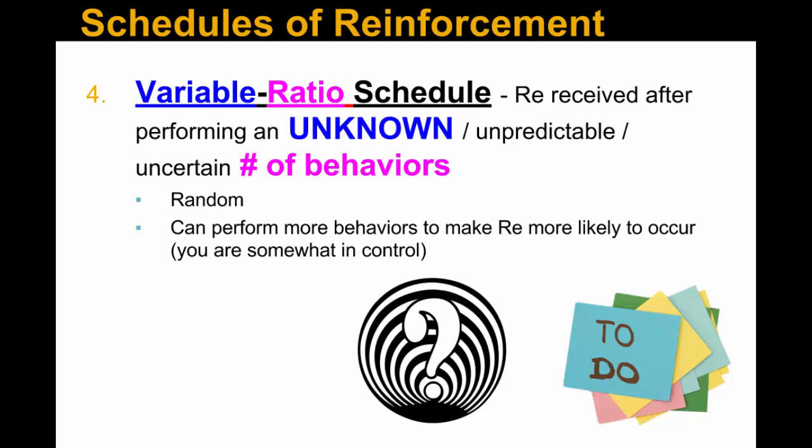Another example of variable ratio: when I was in high school training to break a school record, I couldn't predict which race I'd actually break it in. I don't know how many races I have to run before I break that record — that's a variable ratio. It's a ratio because I actually have to do something — I have to run to break the school record.